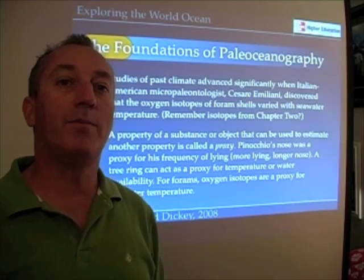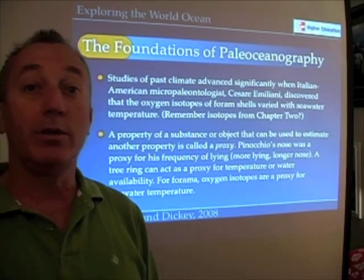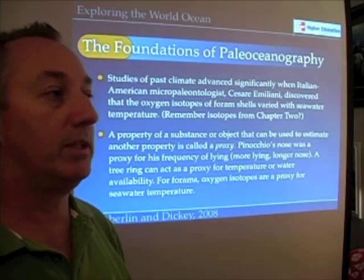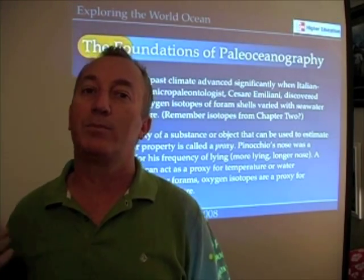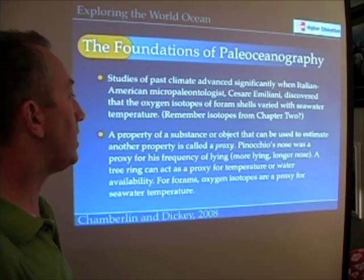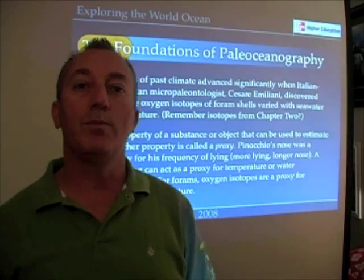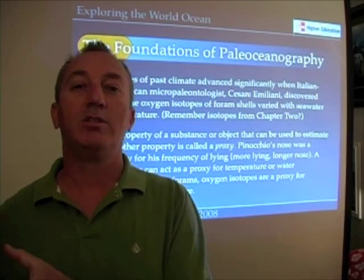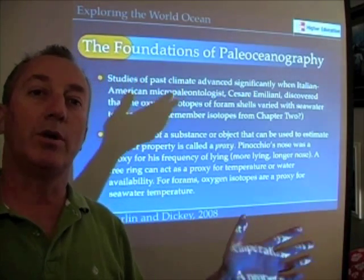Much of what we know about Earth's past climate — at least beyond a couple hundred years since we've been directly measuring temperature and other things — comes from the study of proxies. So you'll hear that word, and it's important to remember that we're using one thing, in this case the oxygen isotopes of foraminiferous shells, to say something about seawater temperature.